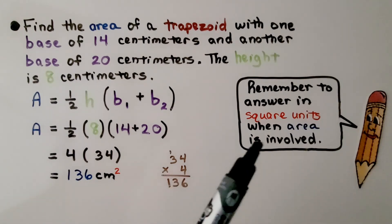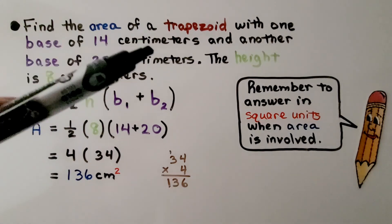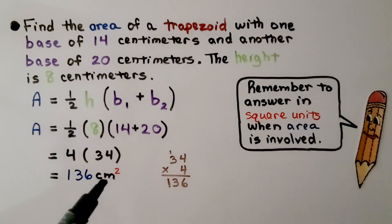And remember to answer in square units. When area is involved, we have 136 centimeters squared. And because these were all in centimeters, we know our answer should be in centimeters.